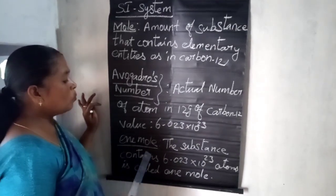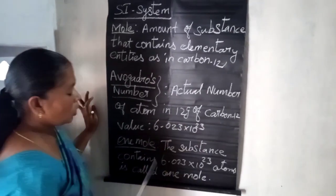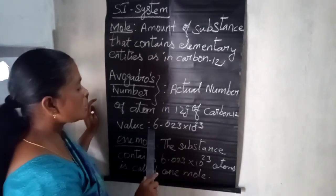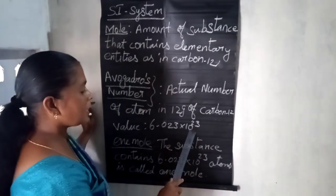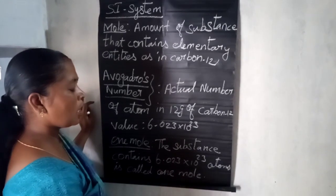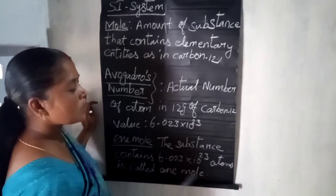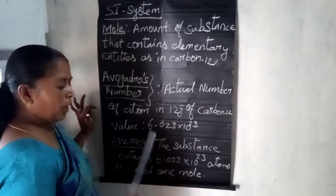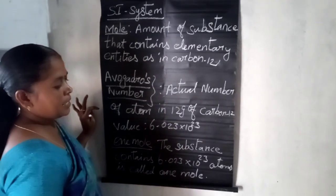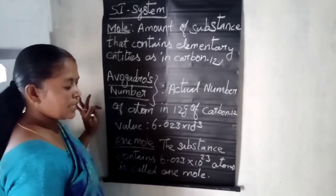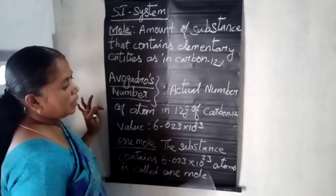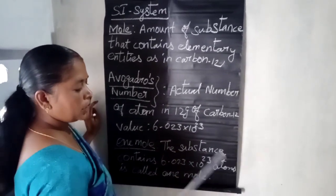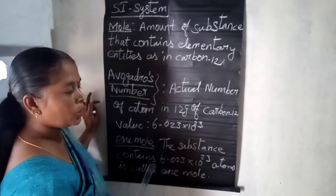Next topic: one mole. What is meant by one mole? If a substance contains 6.023 × 10²³ particles — whether atoms or molecules — that is called one mole. So wherever you calculate moles, whether the substance is hydrogen, oxygen, carbon dioxide, or H₂O, if it contains 6.023 × 10²³ particles, that equals one mole.